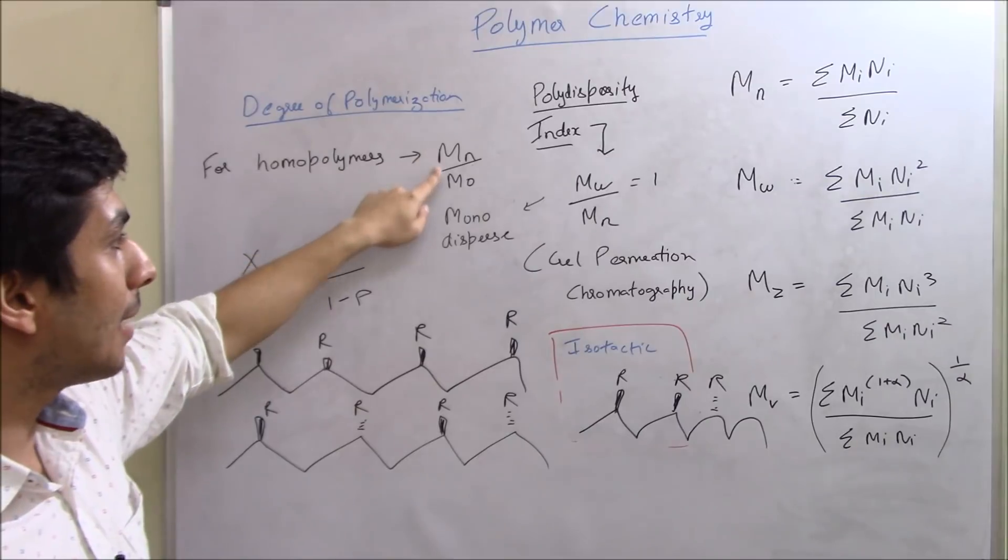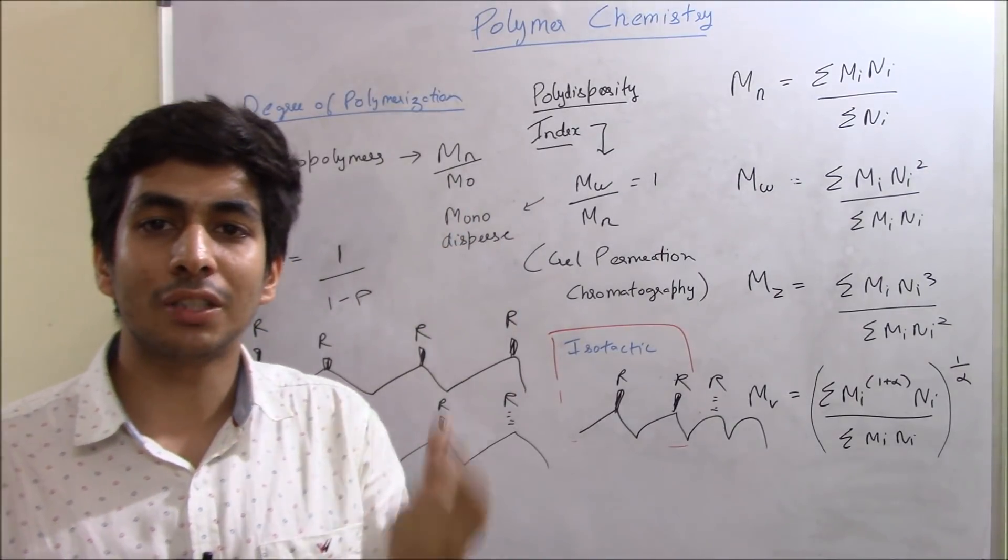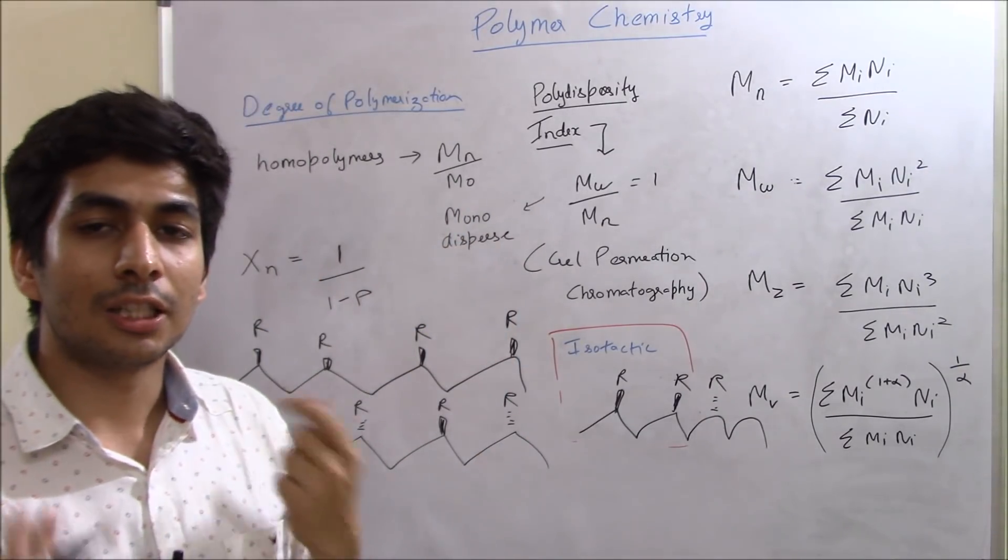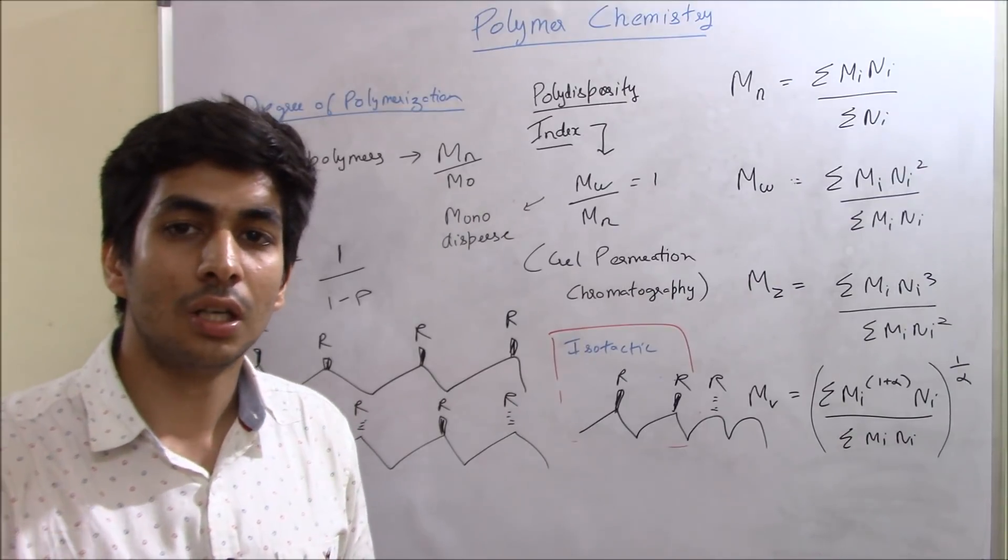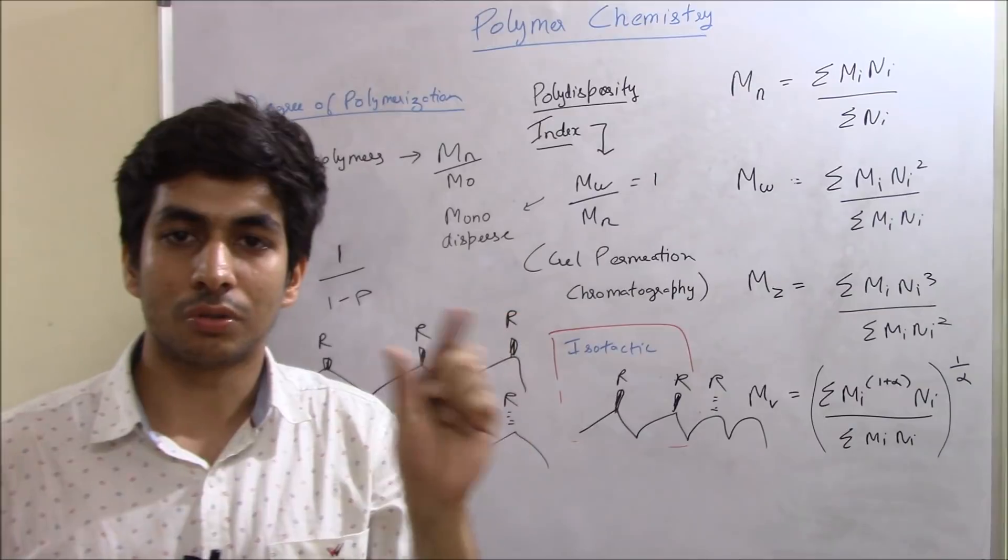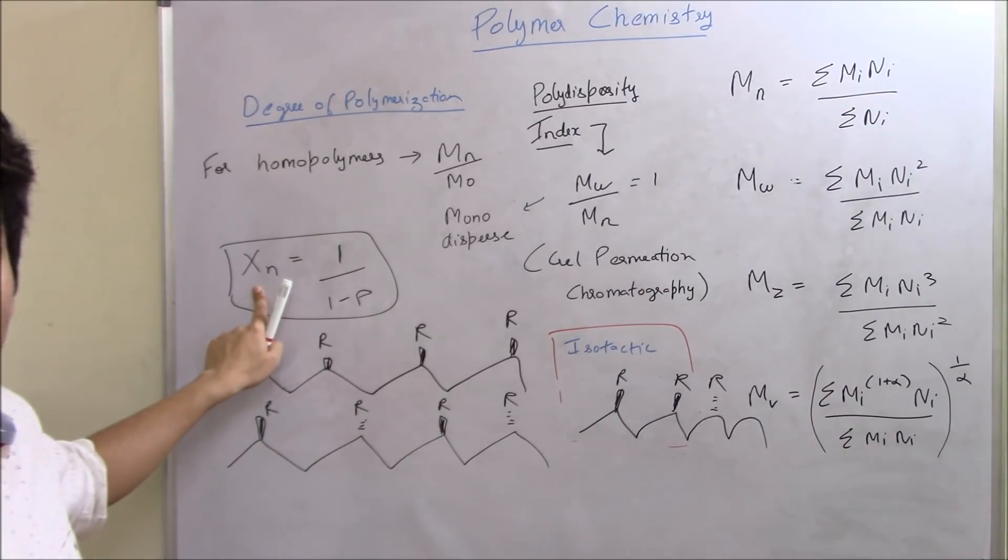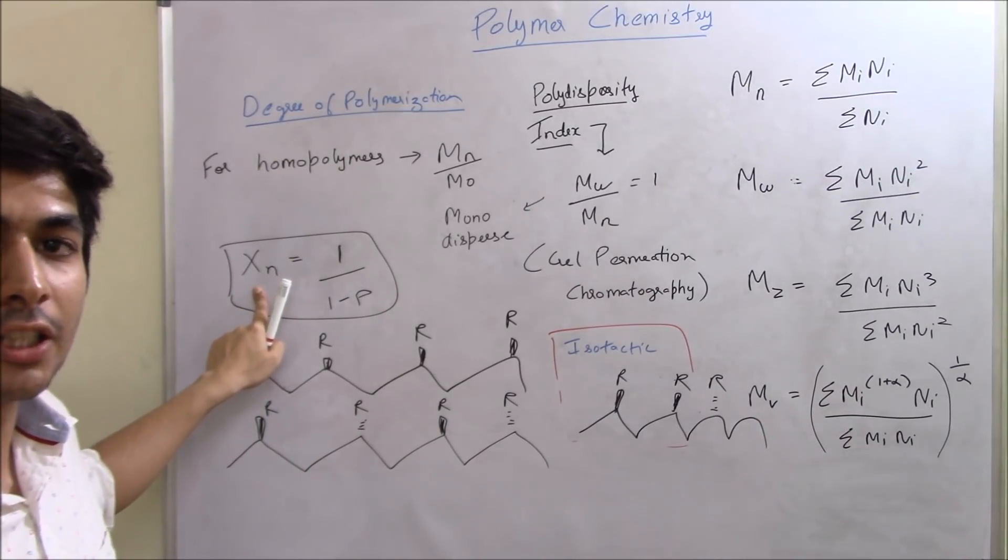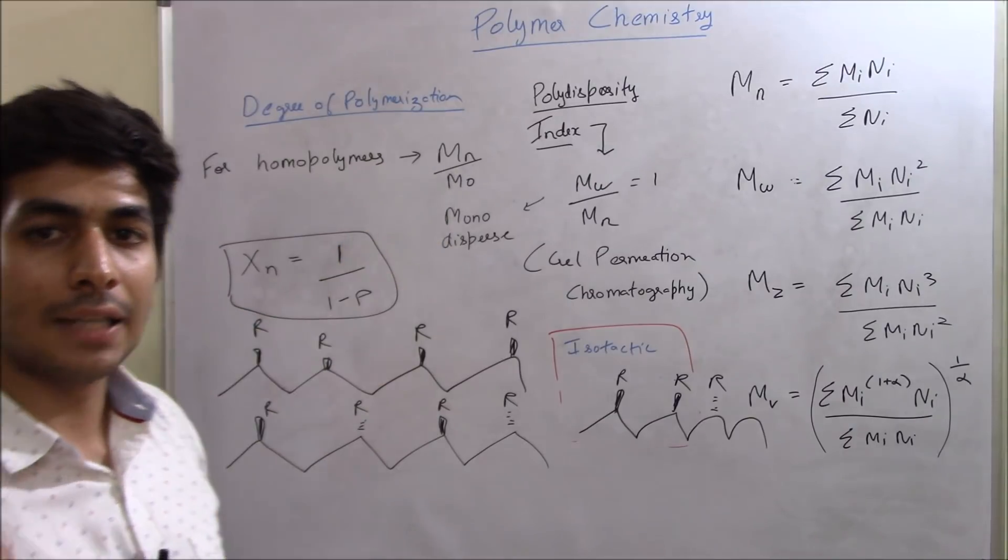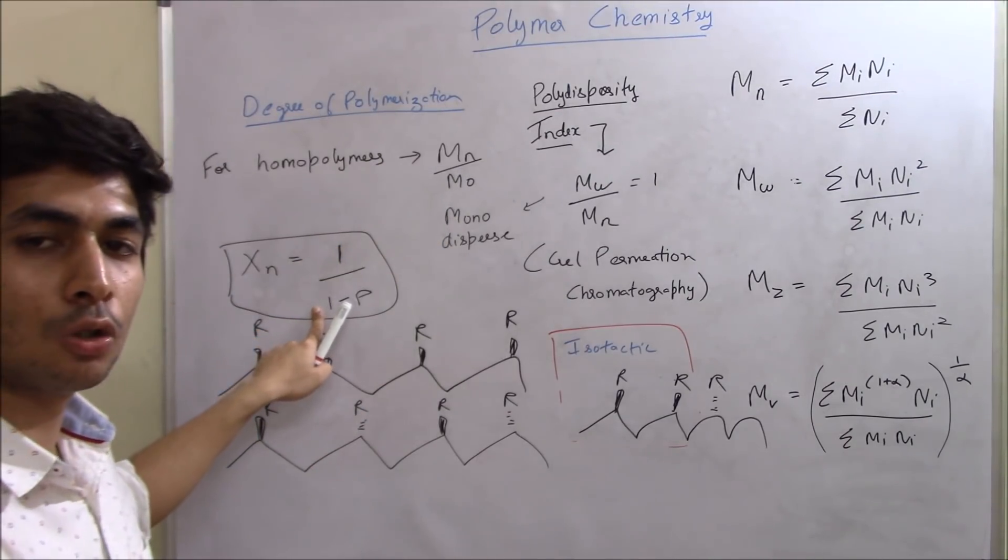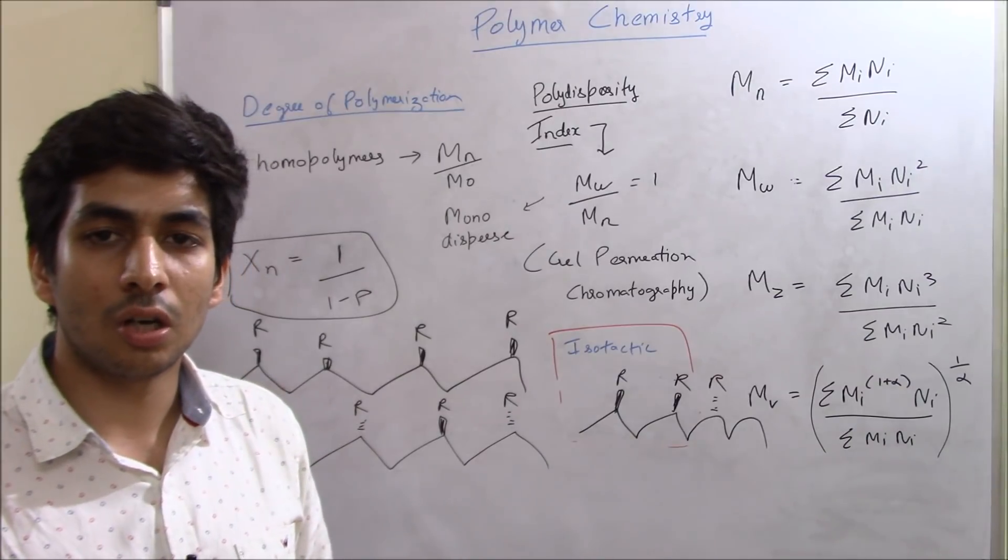So for that, the formula is MN upon MO. Now MN, you know what is MN? MN is number average molecular weight. But what is MO? MO is basically mass of the single monomeric unit. So for example, the number average molecular weight of a polysaccharide of glucose is let's say 10,000. So you have to divide it by the molecular mass of glucose, single unit of glucose. And then there's another formula, which is this XN, this term XN is basically a symbol to denote degree of polymerization. It's a symbol to denote degree of polymerization. So one formula for homopolymers is MN upon MO and the other formula is 1 upon 1 minus P and this is applicable to all kinds of polymers.